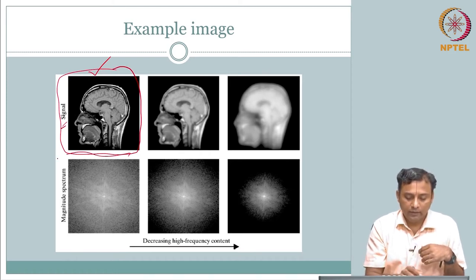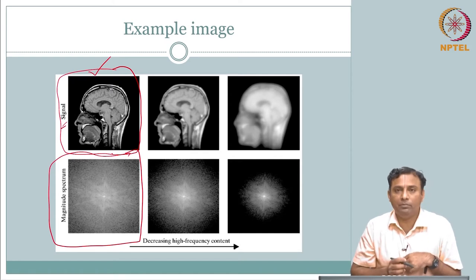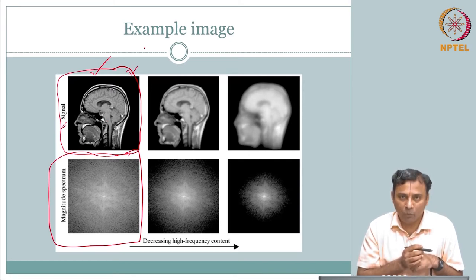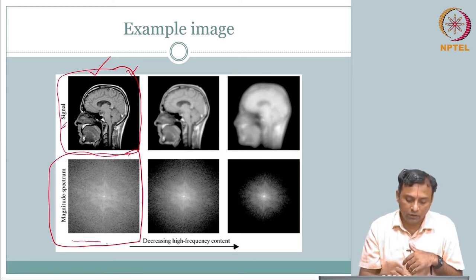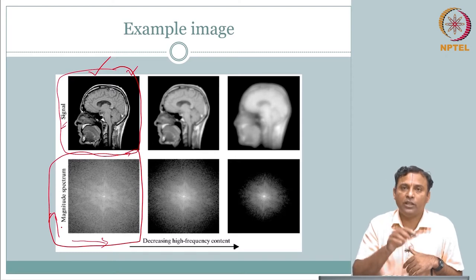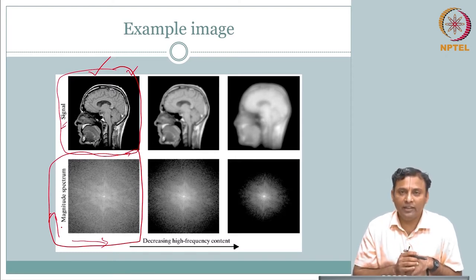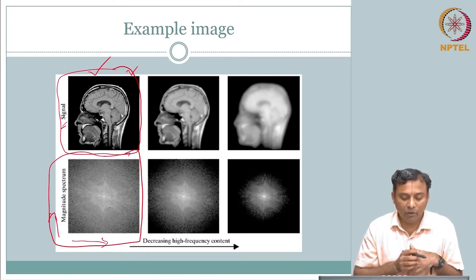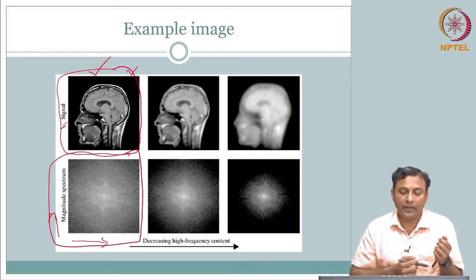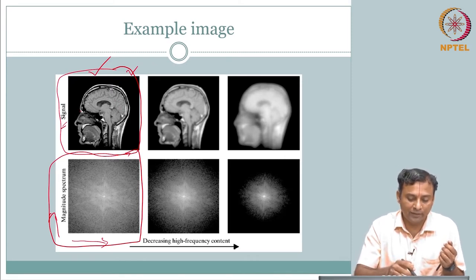What you see next is the magnitude spectrum. That means I have taken the Fourier transform and decomposed this 2D signal f(x, y) into capital F(u, v). This shows u and v — frequency along the x-axis and frequency along the y-axis. For most of you, looking at this spectrum, you cannot really make out much — in the spatial domain you can see the head, brain, nose, and mouth — whereas in the frequency domain it is very difficult to interpret.